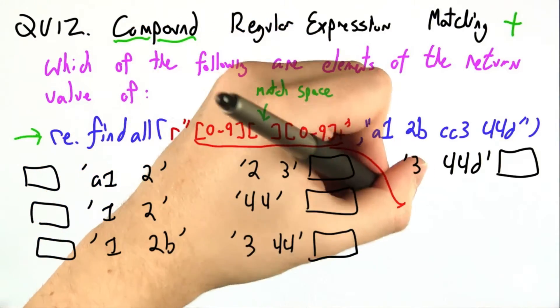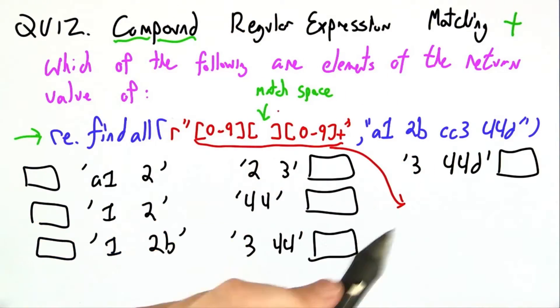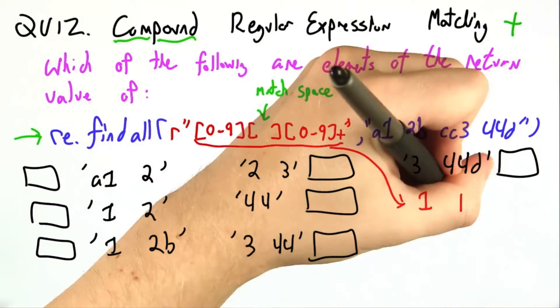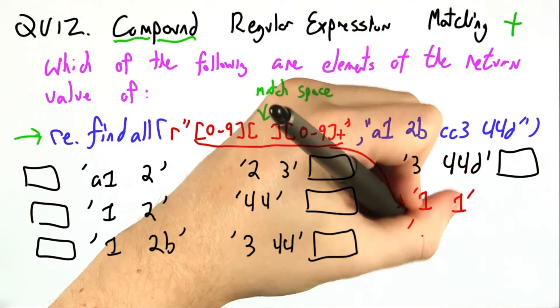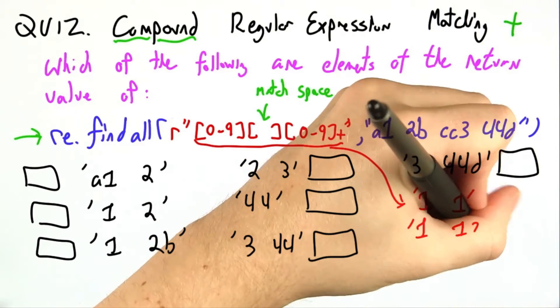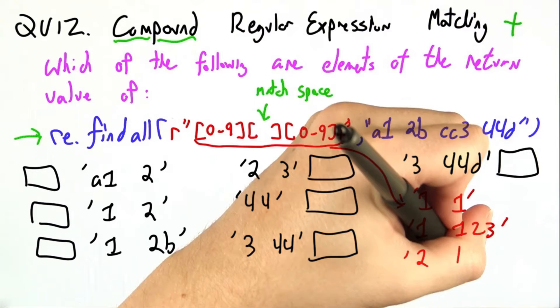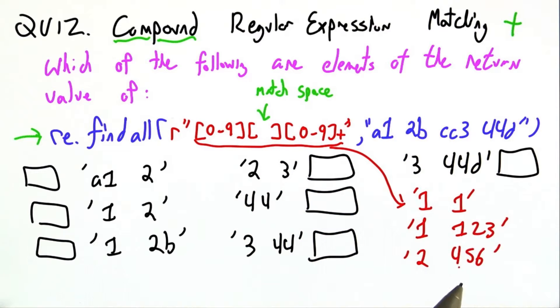A good way to get started with such a problem is to write out what sorts of strings are matched. There are things like 1 space 1, 1 space 123 because of this plus, 2 space 456, and so on.